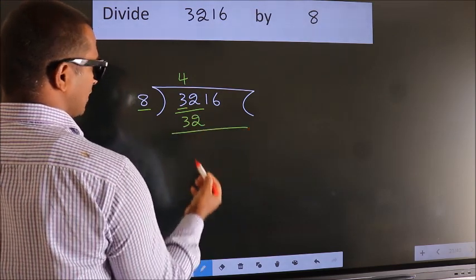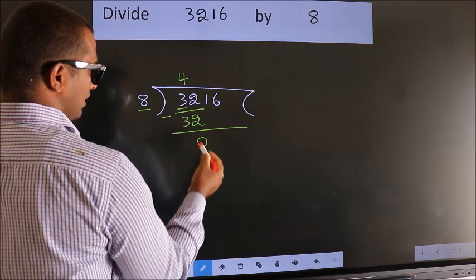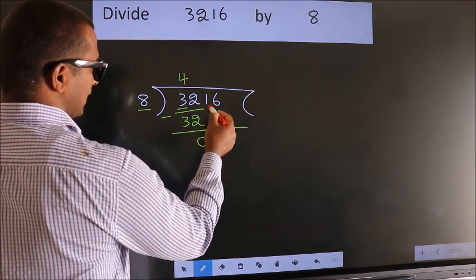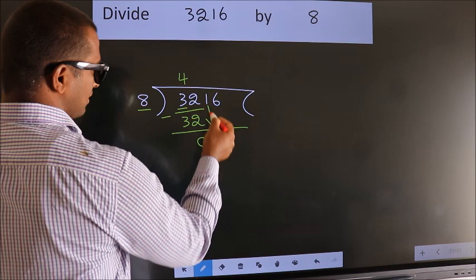Now we should subtract. We get 0. After this, bring down the beside number. So 1 down.